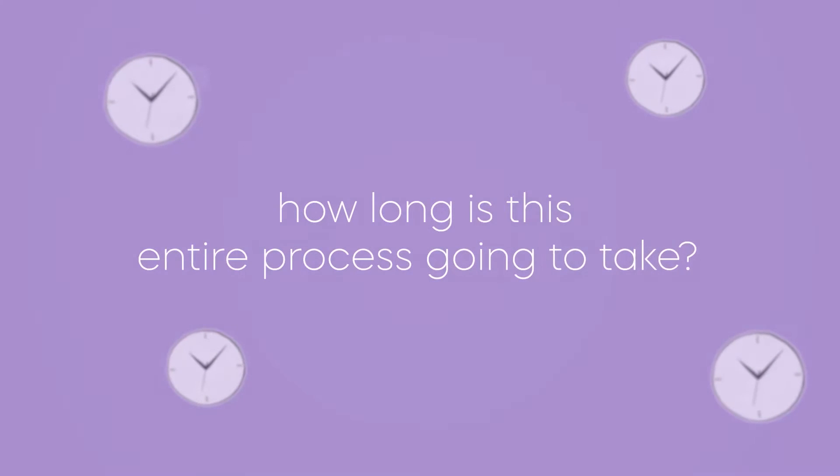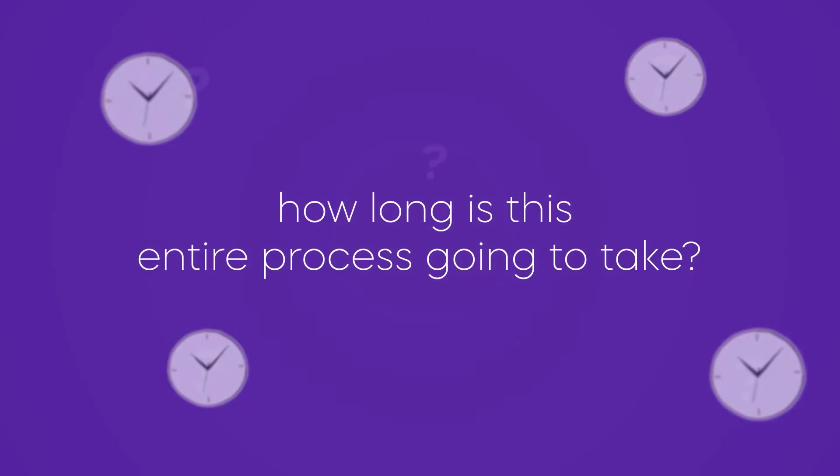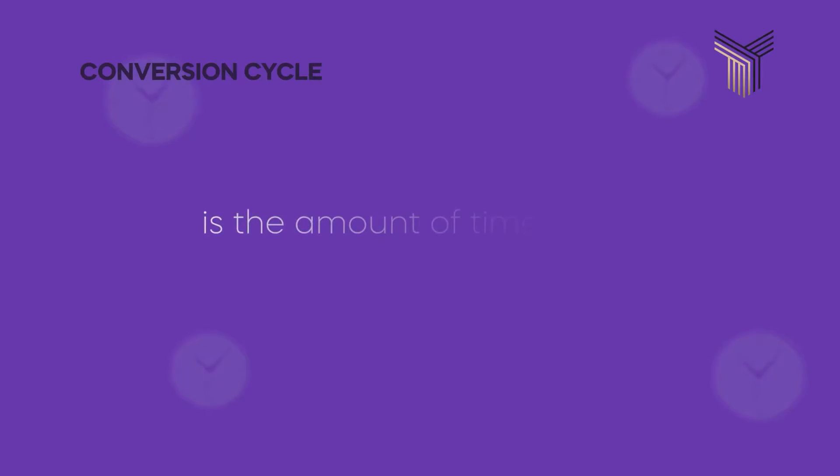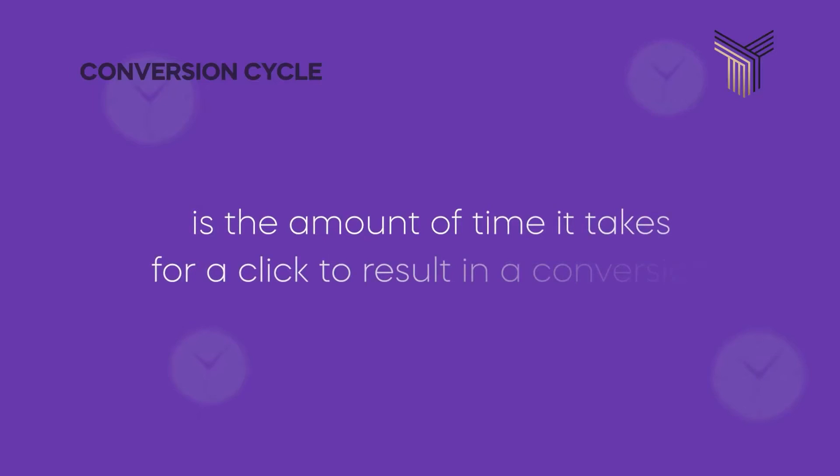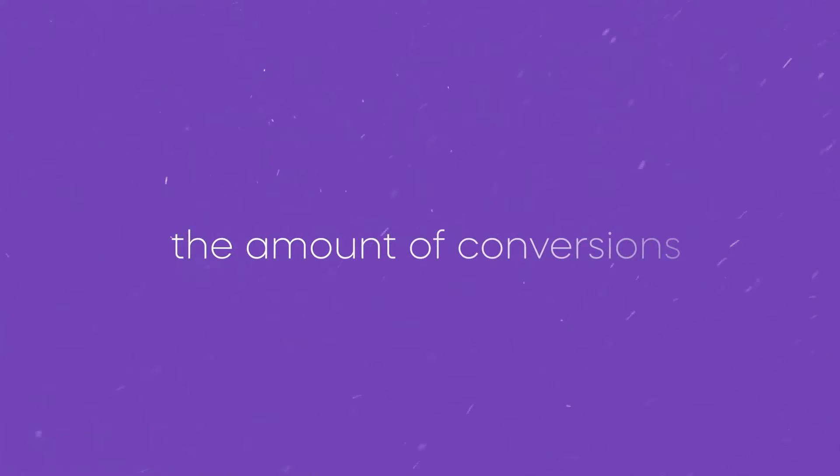How long is this entire process going to take? It is going to take three conversion cycles. A conversion cycle is the amount of time it takes for a click to result in a conversion — essentially, Google imports that into Google Ads and then the AI can use that data to make good decisions. However, there are two factors that will impact how long these three conversion cycles actually take.